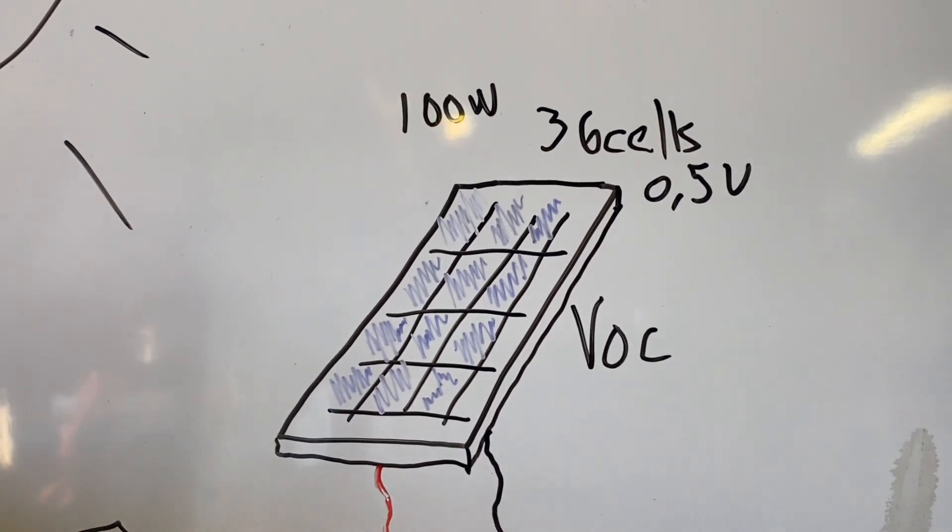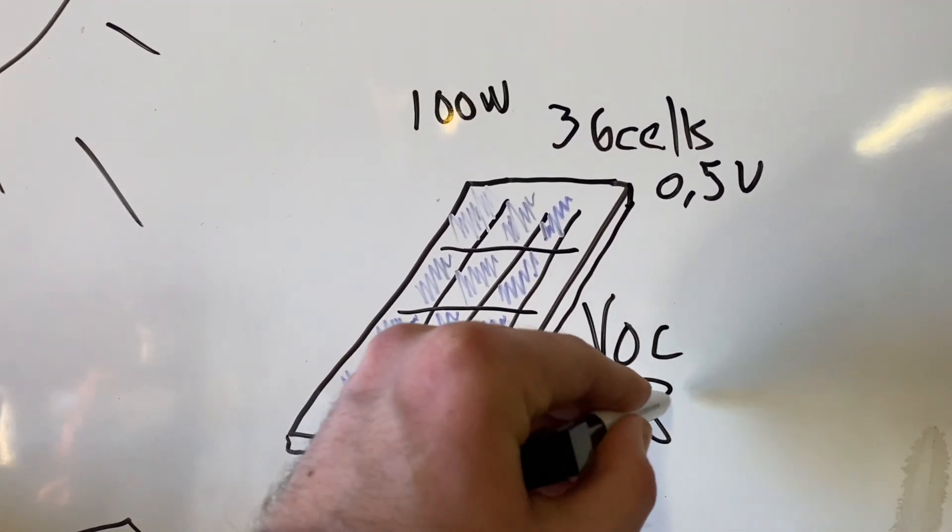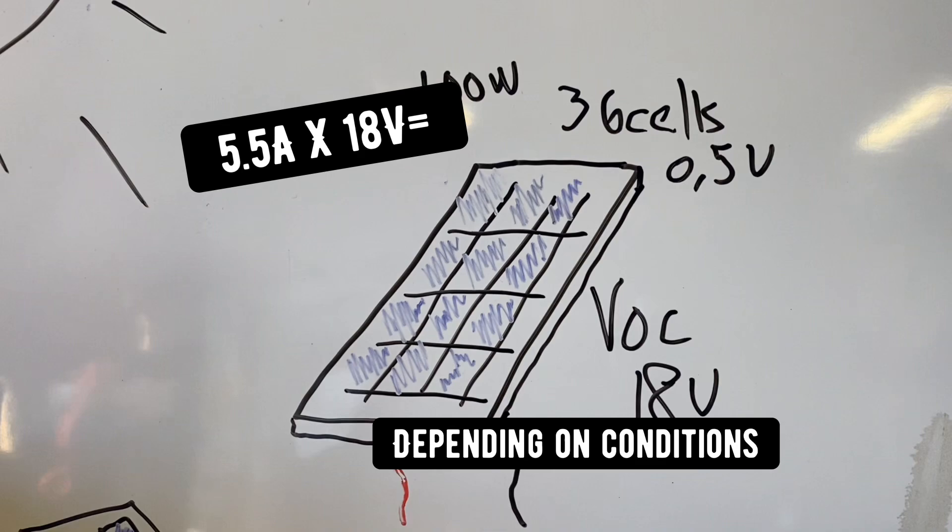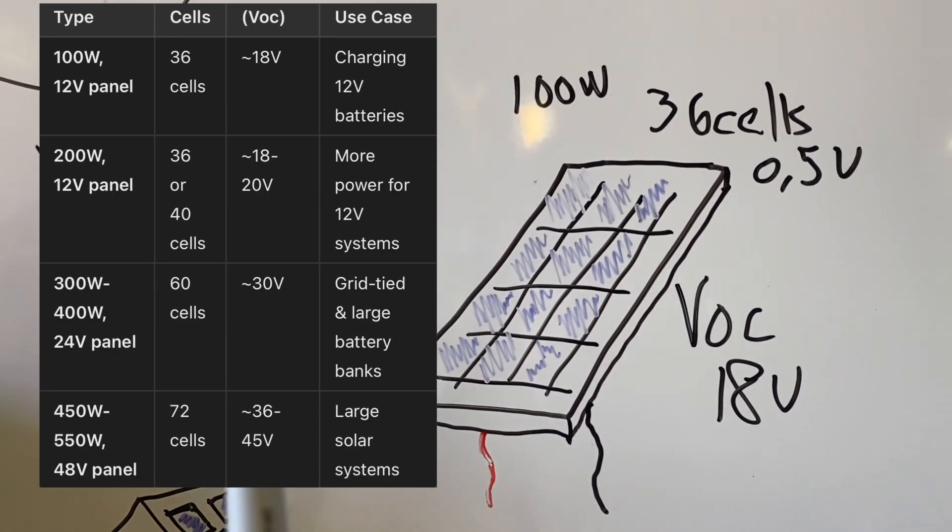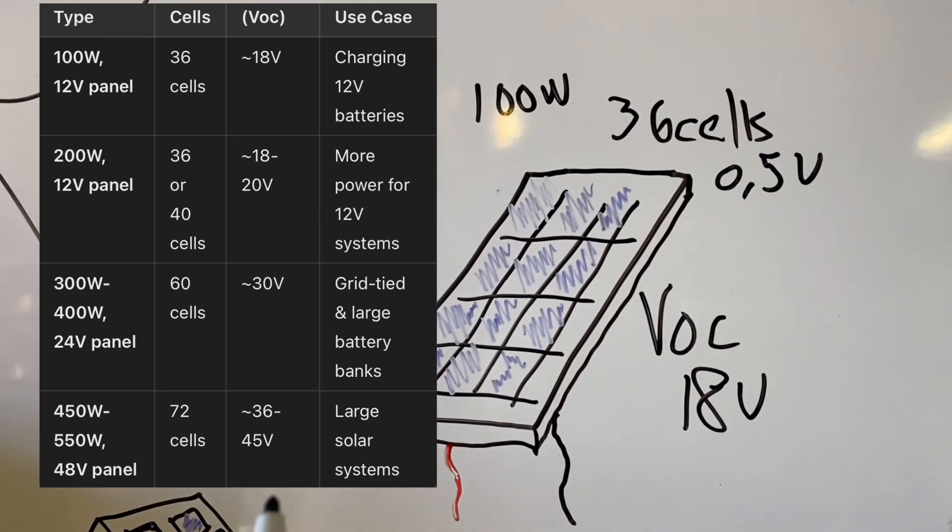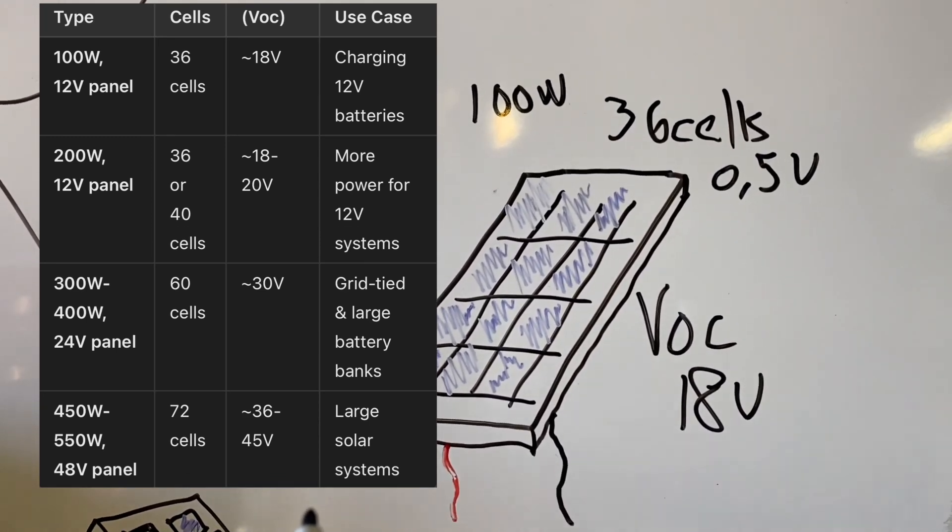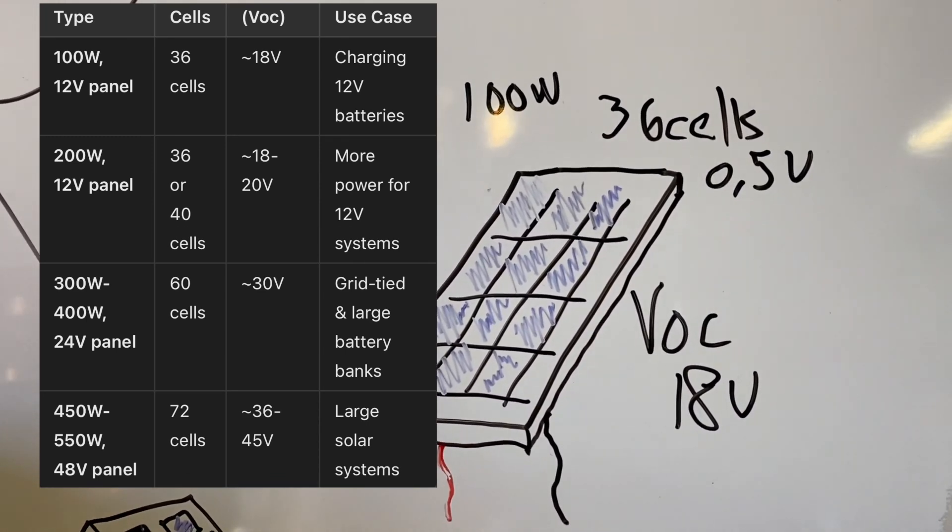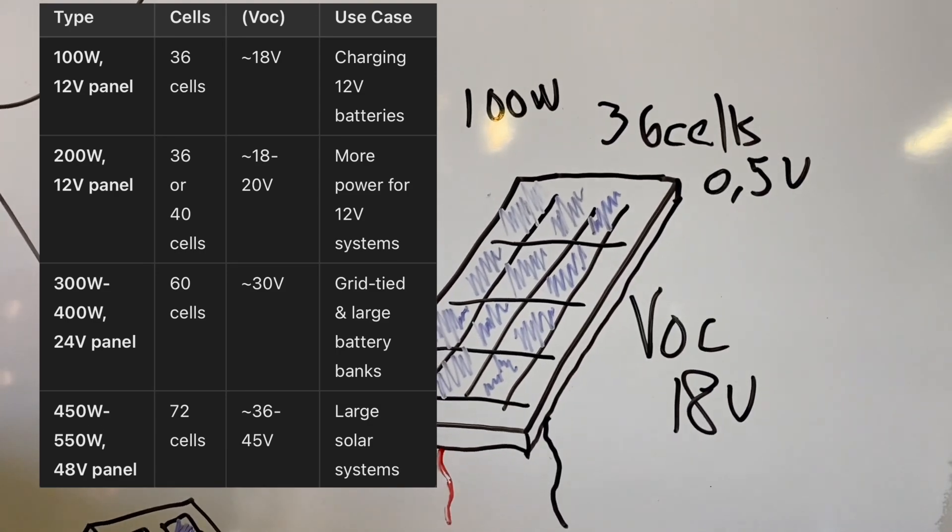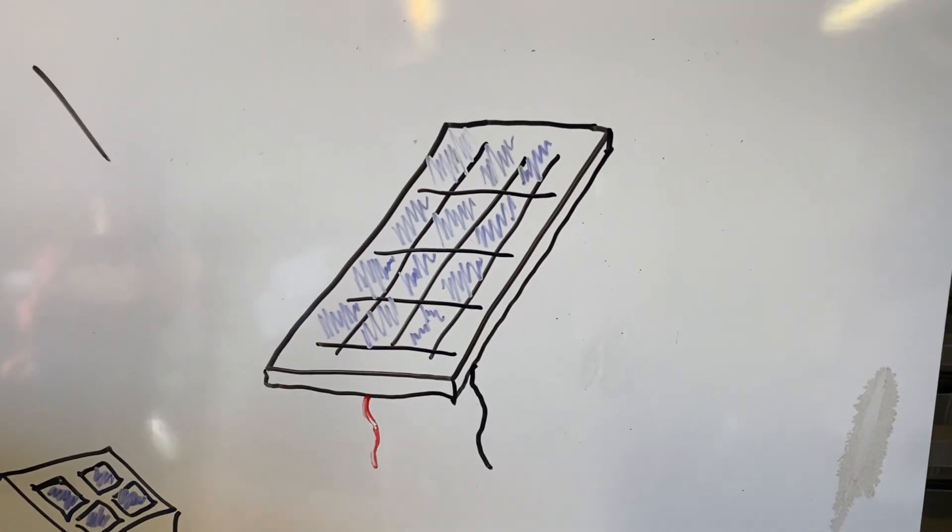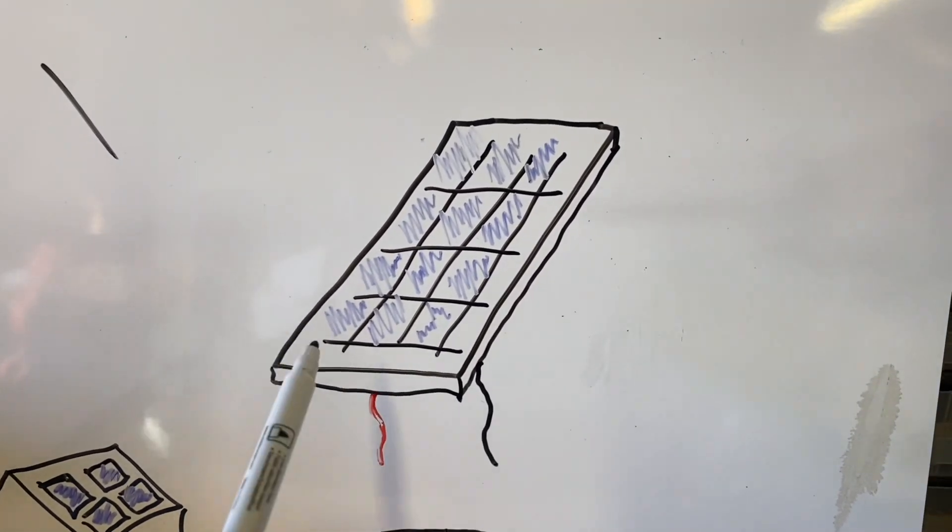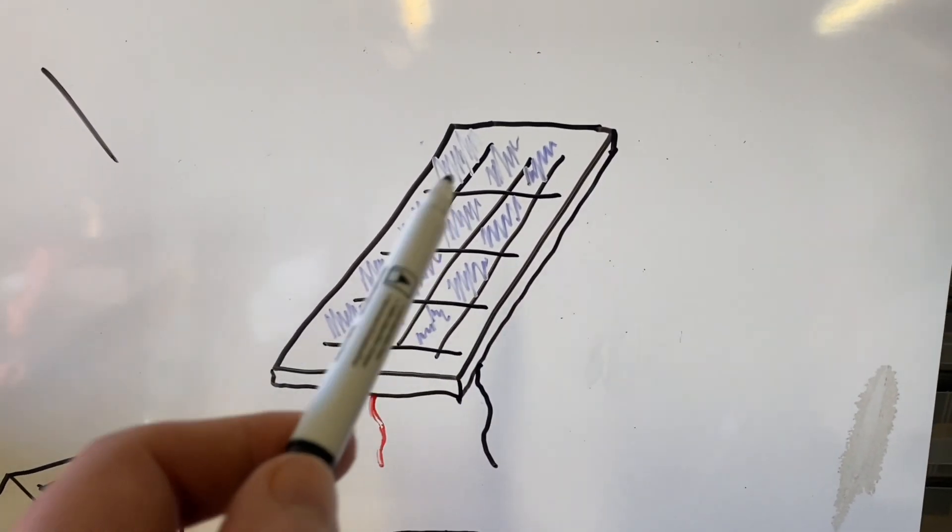So in your typical 12 volt 100 watt solar panel, the VOC voltage open circuit is 18 volts. There are some common solar panel configurations describing the wattage, voltage, and how many cells there are in each panel.